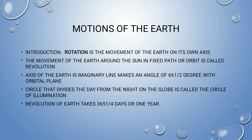The circle that divides the day from the night on the globe is called the circle of illumination. Revolution of Earth takes 365 and one-quarter days, or one year. Rotation of Earth takes one day — 24 hours. These are different: revolution takes one year, rotation takes one day.